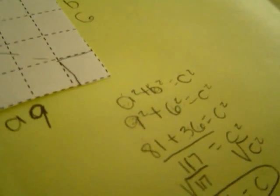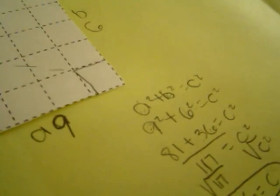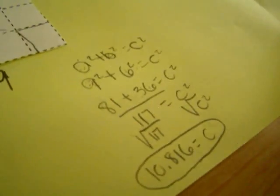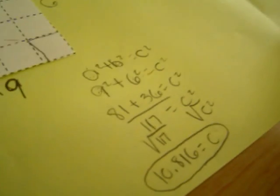We'd have 9 squared plus 6 squared. 9 squared equals 81, 6 squared equals 36, and you add 81 plus 36. That equals 117.